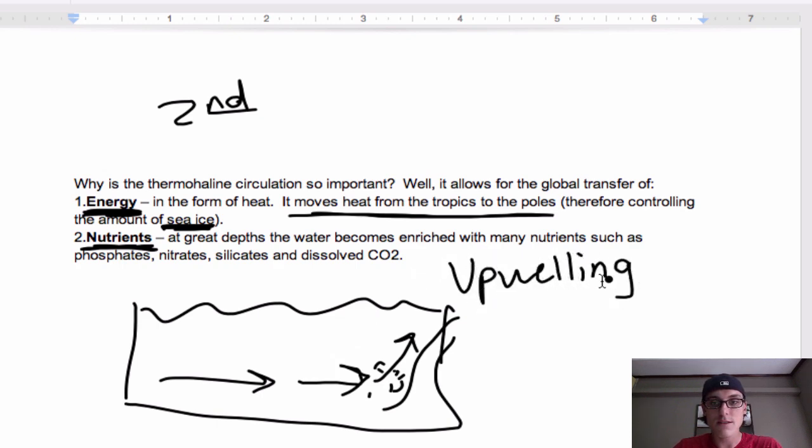This is a geographic term that you're going to need to remember. Upwelling is when nutrients are brought to the surface from deep ocean currents driving that nutrient-rich water back to the surface, at which point what you get is you get surface winds then blowing it back across the surface of the ocean back toward another location.